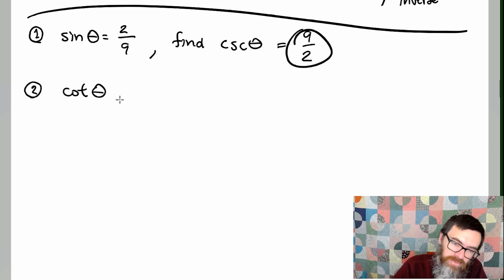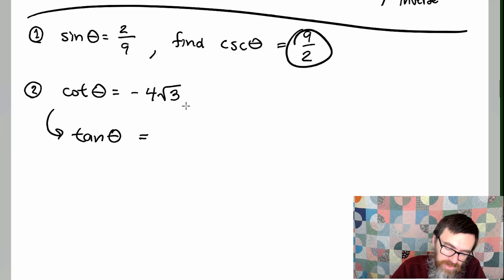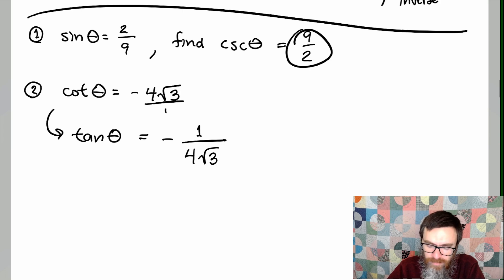So if cotangent of theta is equal to negative 4 square roots of 3, then what does that mean for the tangent of theta? Well again, cotangent and tangent are reciprocals of each other. So if I do the reciprocal of this, keep in mind this is over 1, the reciprocal would be negative 1 over 4 square roots of 3. I can't leave it like that because I do need to rationalize.